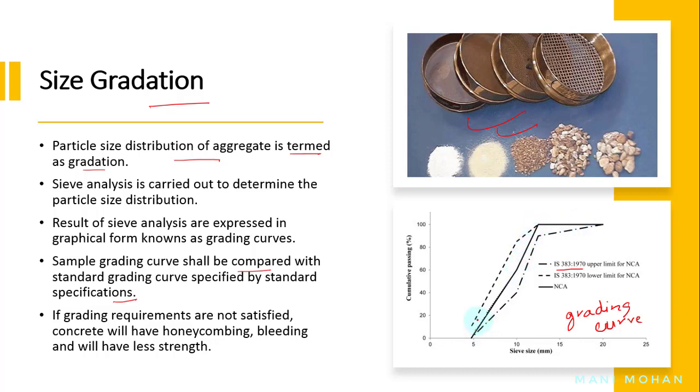Whatever sample you are testing using sieve analysis should come within these limits. If grading requirements are not satisfied, concrete will have honeycombing, bleeding, and will have less strength.